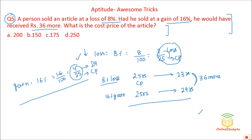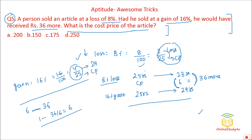So 6 = 36, which means 1 = 36 ÷ 6 = 6. They are asking for the cost price. Cost price corresponds to 25, so 25 = 25 × 6 = Rs. 150. The cost price of the article is Rs. 150.